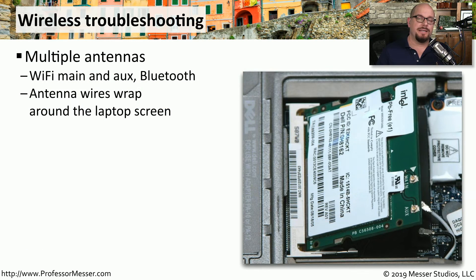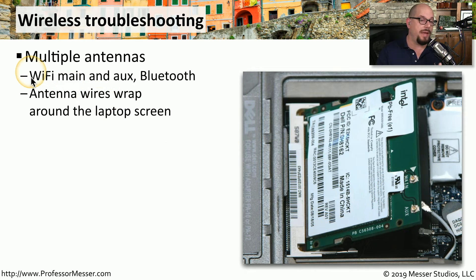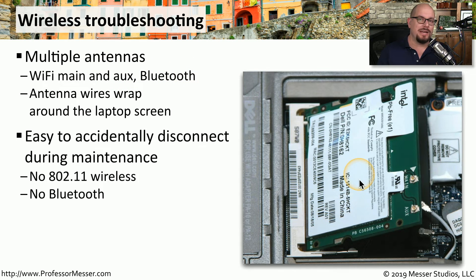There are many different antennas inside your laptop, and they're usually running around the top of the LCD display since that tends to be the highest point when using the laptop. You may see a number of antenna wires — Wi-Fi main, Wi-Fi auxiliary, Bluetooth, and others. When working inside your laptop, it's very easy to accidentally disconnect one or more of those antenna wires, so even if your work is unrelated to the antennas, make sure you check those connectors before closing up your laptop.